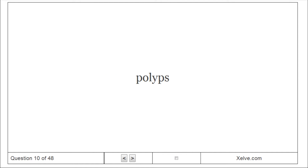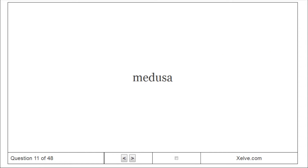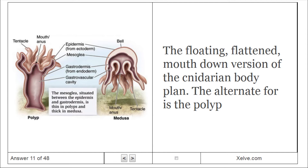Polyps. The sessile variant of the cnidarian body plan. The alternate form is the medusa. Medusa. The floating, flattened, mouth-down version of the cnidarian body plan. The alternate form is the polyp.